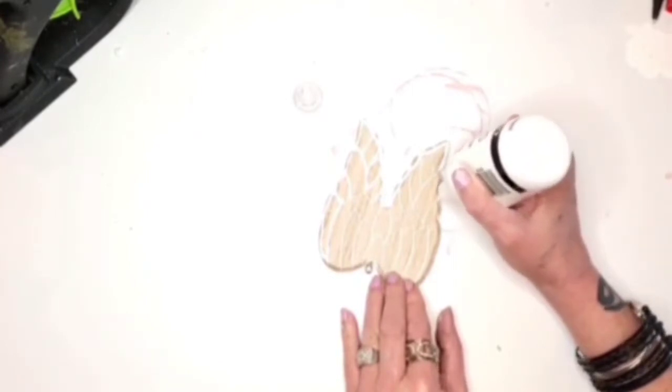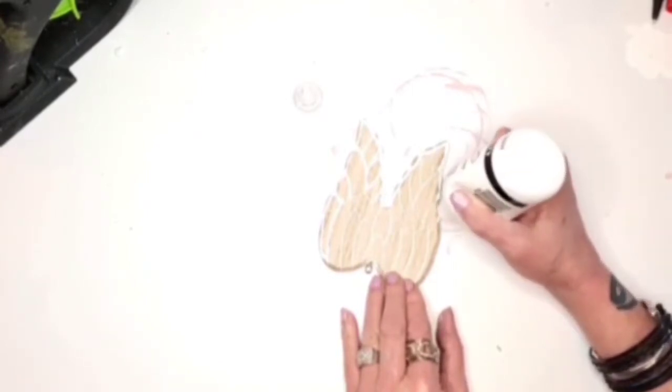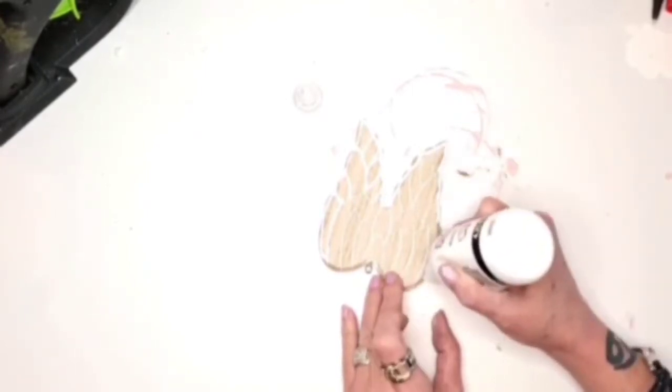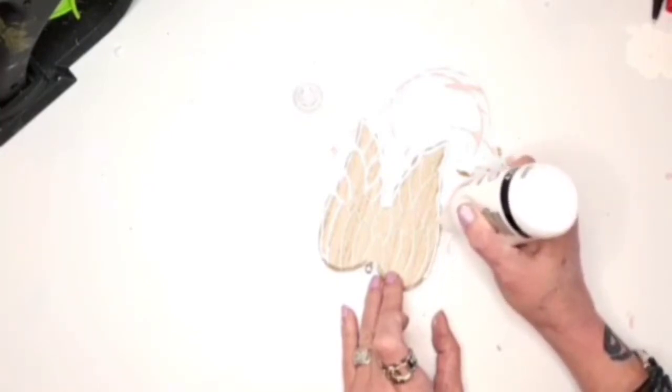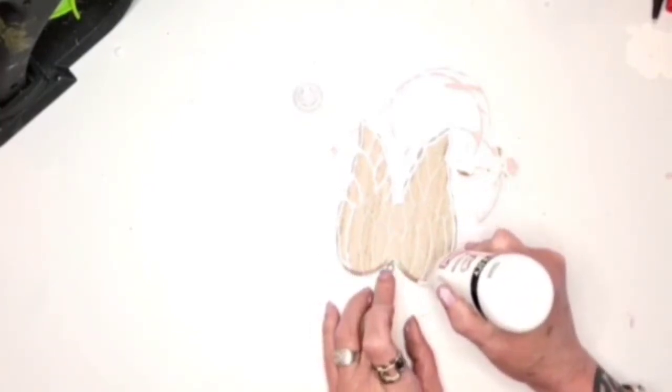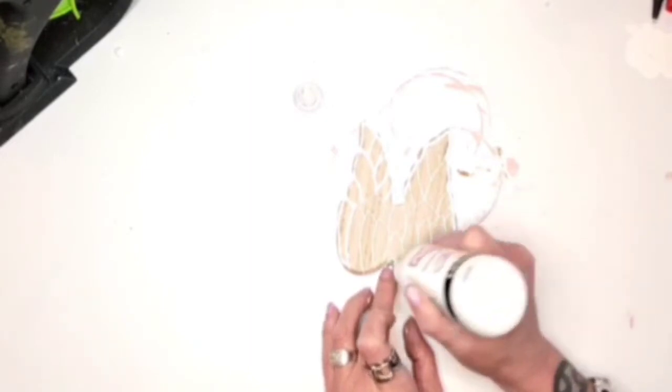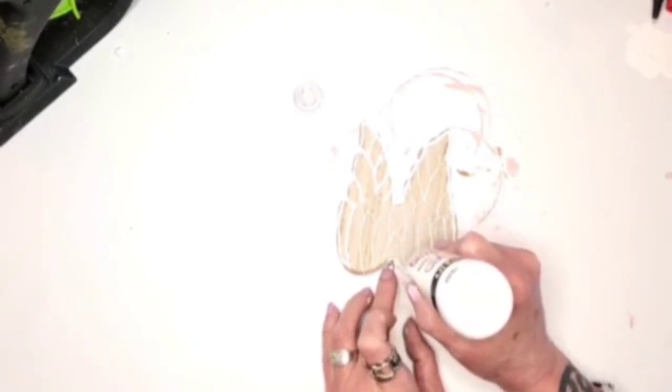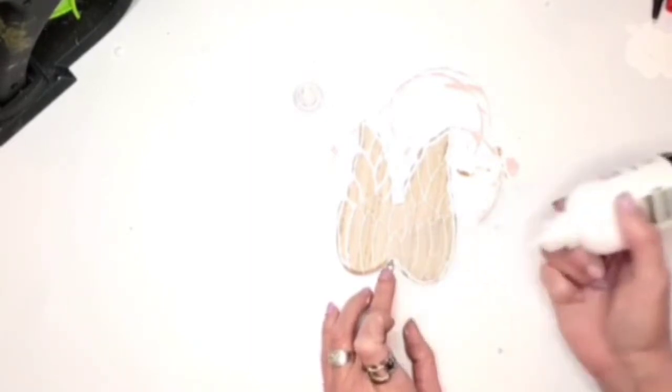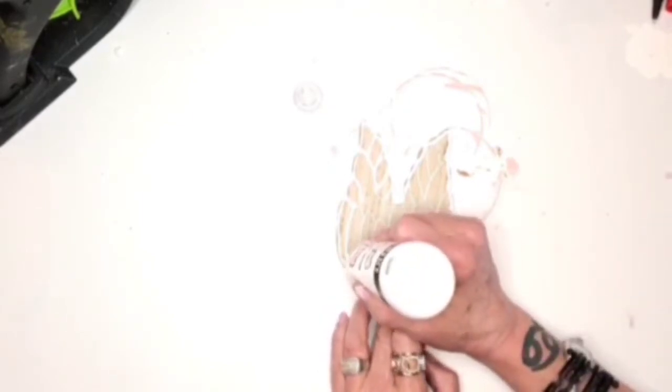I have these little angel wings. These also came from the dollar tree. I'm going to go in with some puffy paint here. I'm just going to juice it up a little bit, just going over the lines with the puffy paint. I go in and add a ribbon for the hanger.